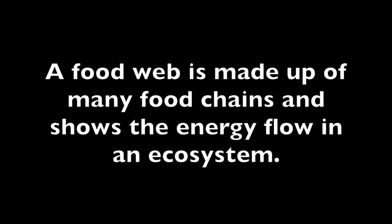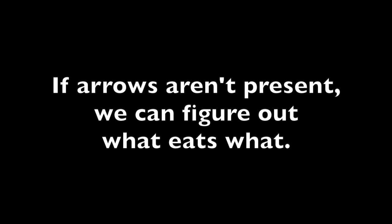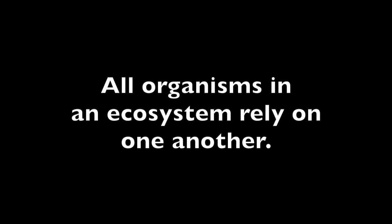Now let's review. A food web is made up of many food chains and shows the energy flow in an ecosystem. If arrows aren't present, we can figure out what eats what, and we can use the size of the animals to help us figure it out. We observed that all organisms in an ecosystem rely on one another — looking at each organism in a food web can help us understand that better, like if we take one organism out, it shows the big impact on the others. Finally, we talked about being a problem solver: when you come across something you don't know, use what you know to try to figure it out.